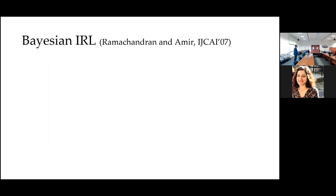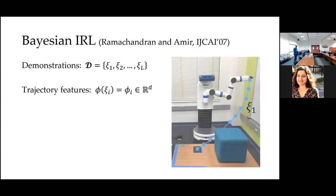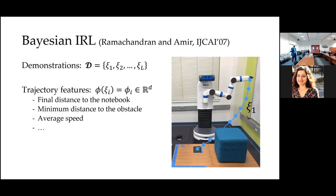To see why from a mathematical perspective: in Bayesian IRL, we are given a set of demonstrations and we have some trajectory features. For example, in a task where a robot is trying to reach a target without hitting an obstacle on the table, the trajectory features can be how close the arm gets to the notebook, how close it gets to the obstacle, its average speed, and so on. The assumption is that the reward function is a linear function of these features, and we need to learn the weight vector w.